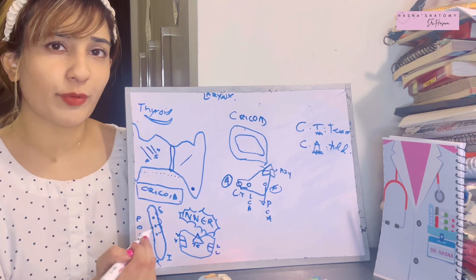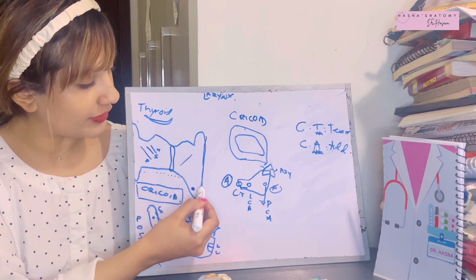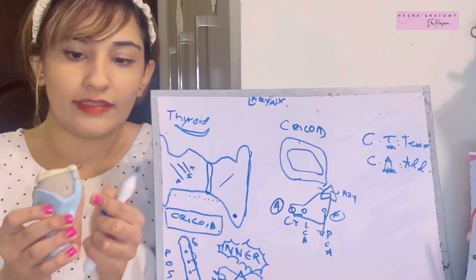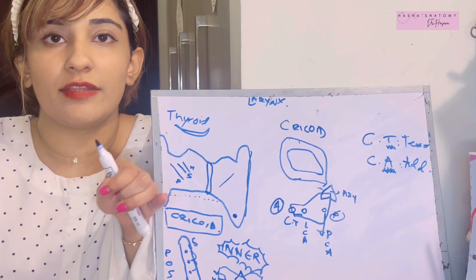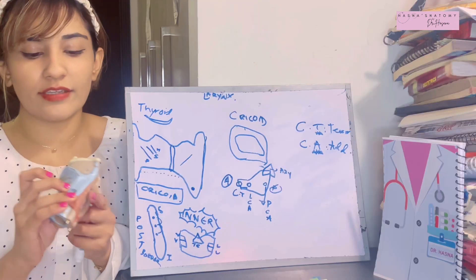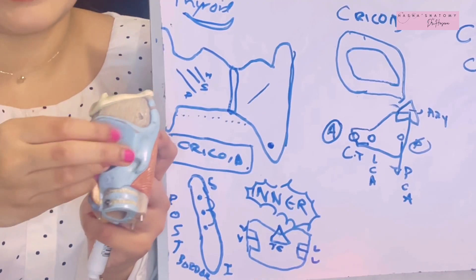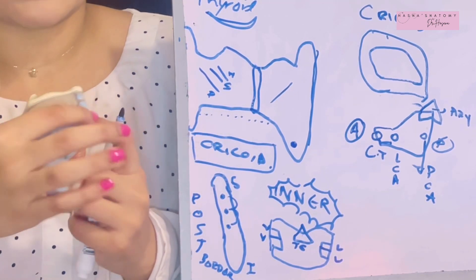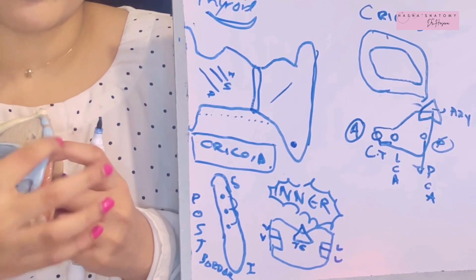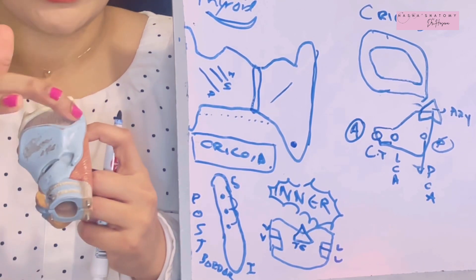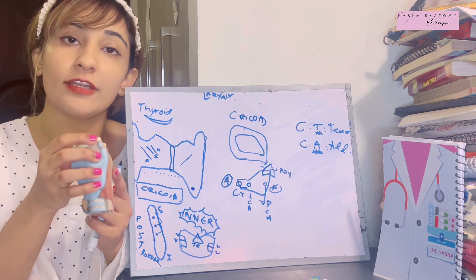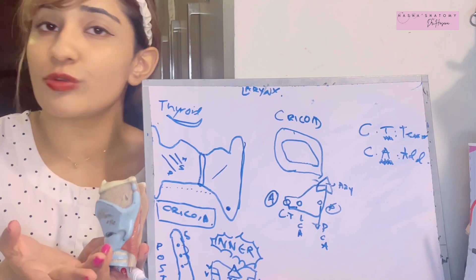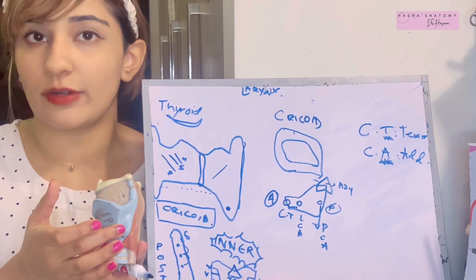The posterior borders of the laminas are free — they do not complete the circle, like wings flapping in the air. The posterior border has two projections: one above and one below. The upper projection is known as the superior horn or superior cornu of the thyroid cartilage, and the lower one is the inferior horn of the thyroid cartilage.